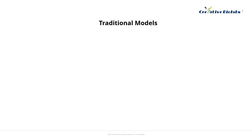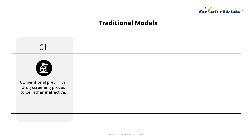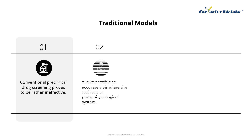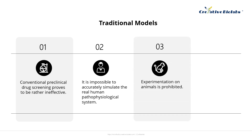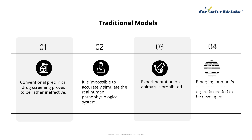Conventional preclinical drug screening based on cell and animal models proves to be rather ineffective. Until now, animal models have failed to accurately replicate real human pathophysiological systems. According to FDA data, approximately 92% of drugs deemed safe and effective in animal trials falter during clinical trials. Furthermore, with the escalating concern for animal welfare, certain European nations have initiated bans on animal experimentation. Therefore, it is of great significance to develop emerging human in vitro models to replace animal models.